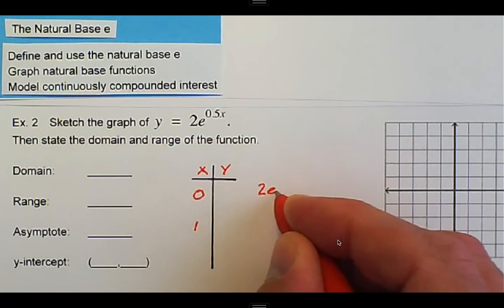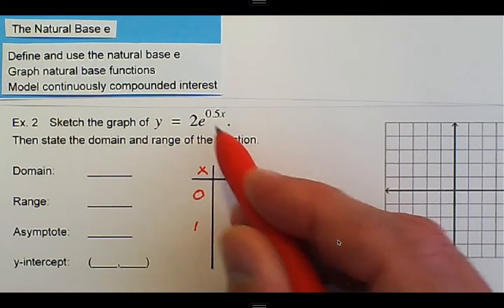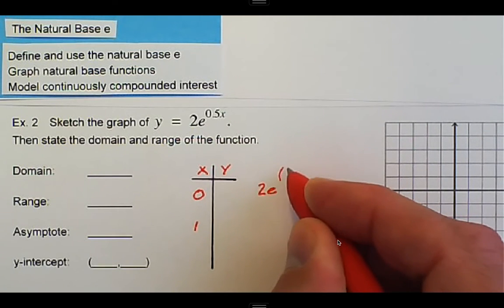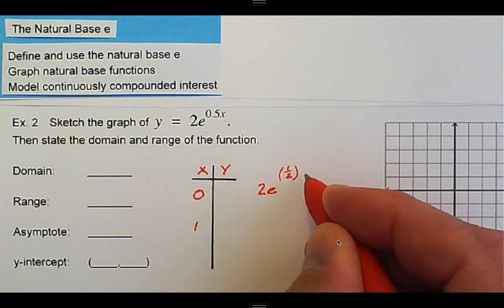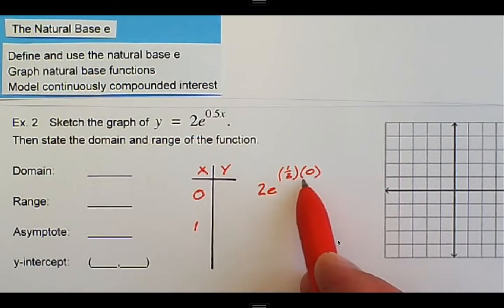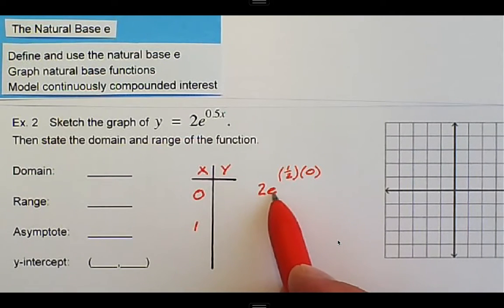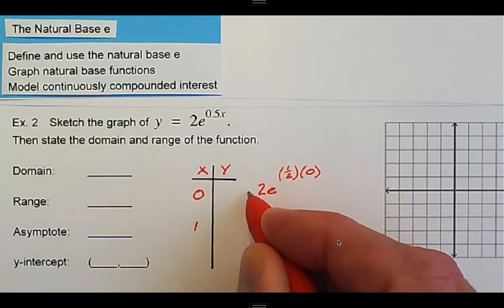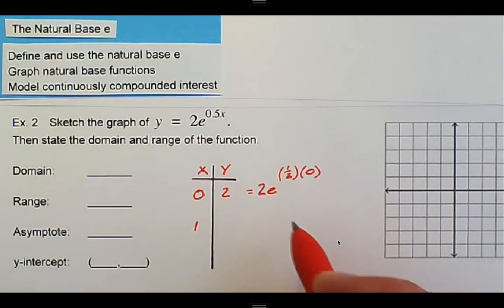So, 2e^... another way to write 0.5 is to say one-half. And x, in this case, is going to be 0. One-half times 0 is 0. Anything to the 0 power is 1, so 2 times 1. And so we have the point (0, 2).